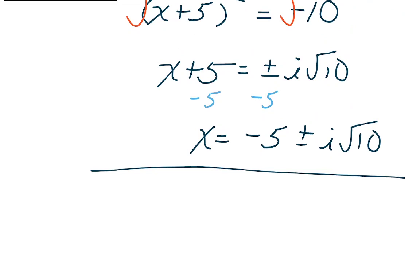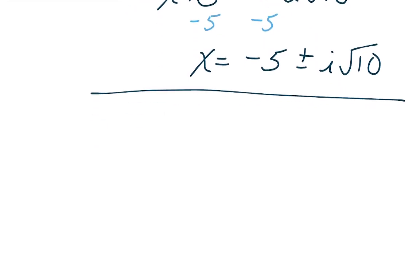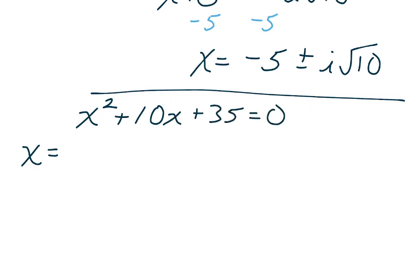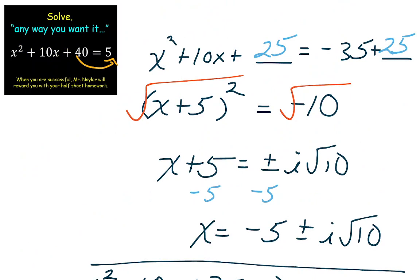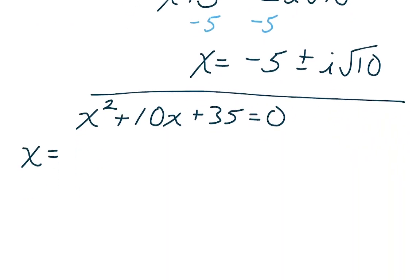There's another way though — the quadratic formula. It's pretty fail-safe. Just make sure your equation is equal to zero first. Move the 5 over by subtracting it, giving x squared plus 10x plus 35 equals zero — now it's ready for the quadratic formula.